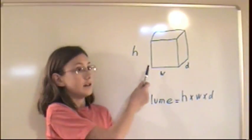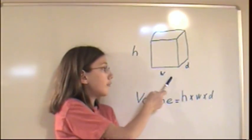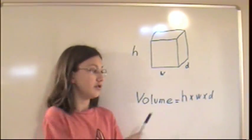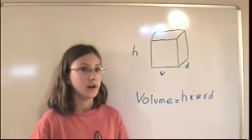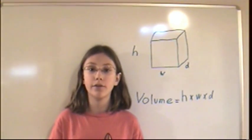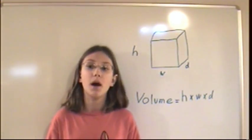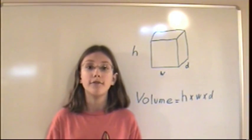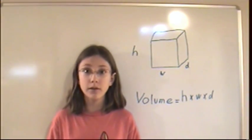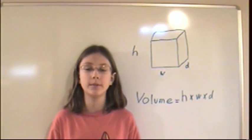The distance of height times the distance of width times the distance of depth equals volume. Volume is the amount of three-dimensional space in an object. Volume is measured in inches cubed, centimeters cubed, meters cubed, etc.